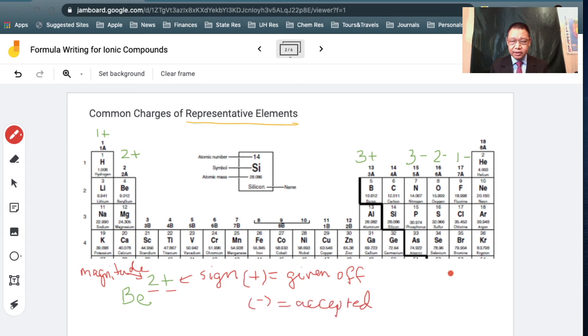So over here on the right side, let's say we have nitrogen. Nitrogen is in group 15. It would typically accept three electrons and become three minus in charge.